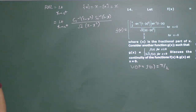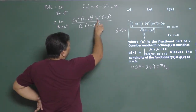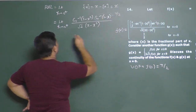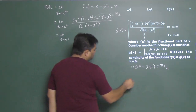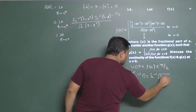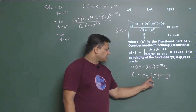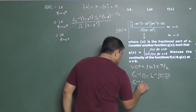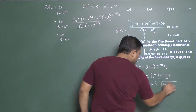Looking at the limit as x approaches 0 plus, we need to remove the limit. If we put x = 0, this becomes sin⁻¹(1), and sin⁻¹(1) = π/2. Now, cos⁻¹ of any quantity equals sin⁻¹(√(1 − quantity²)). So cos⁻¹(1 − x²) becomes sin⁻¹(√(1 − (1−x²)²)).